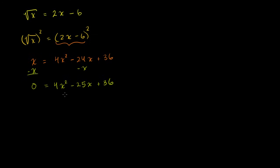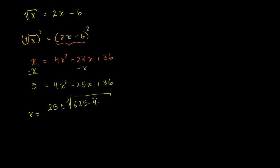For simplicity, let's just use the quadratic formula. The quadratic formula tells us x equals negative b — the negative of negative 25 is positive 25 — plus or minus the square root of 25 squared (which is 625) minus 4 times a (which is 4) times c (which is 36), all over 2 times 4, or 8.